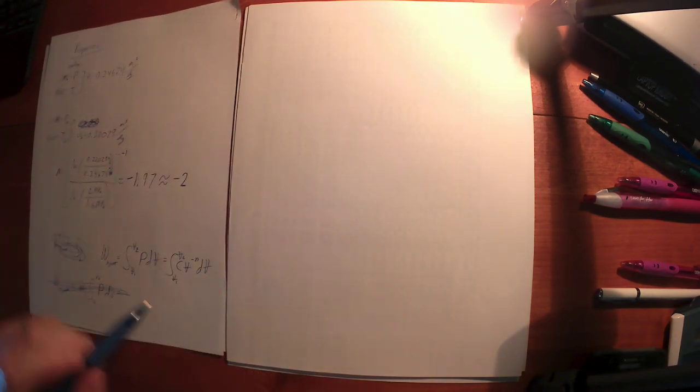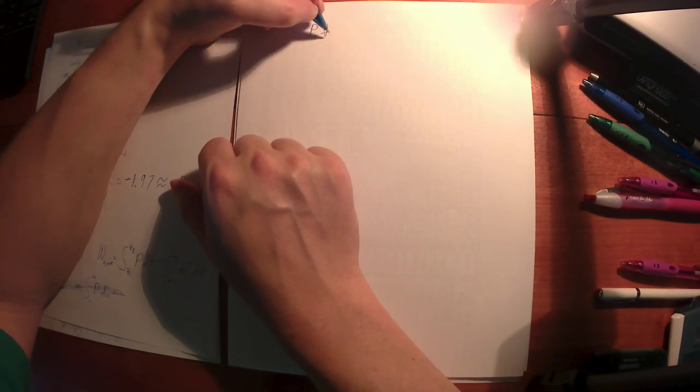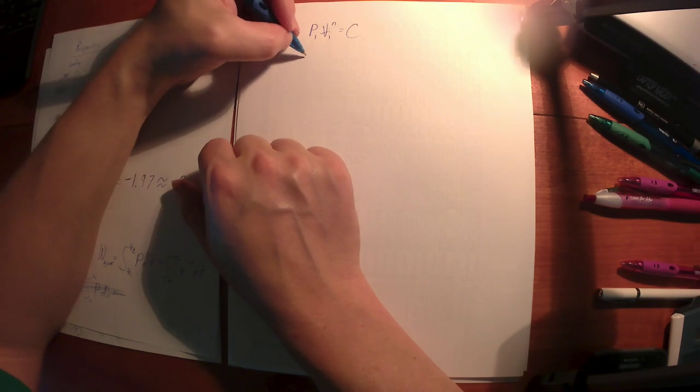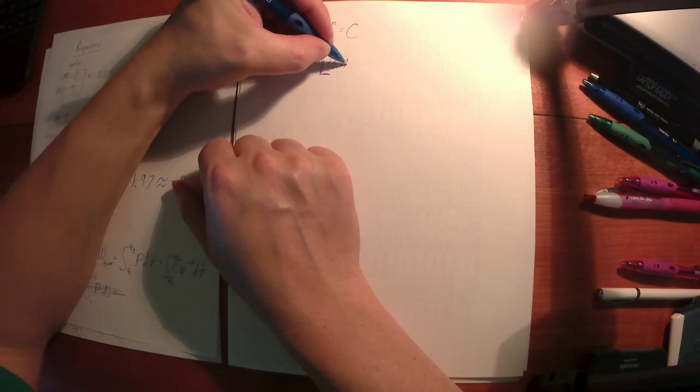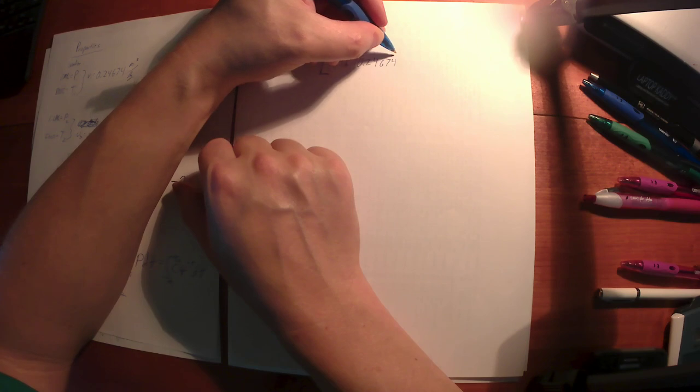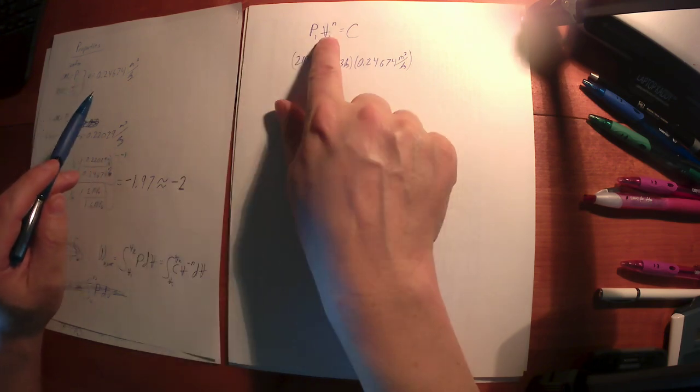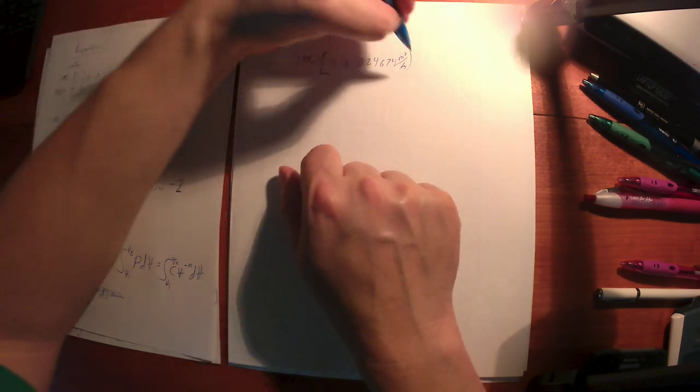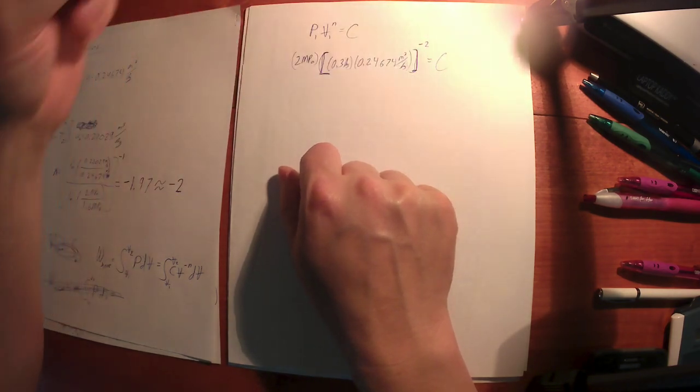All right. Let's keep rocking along. So what else do we need to do? Well, I know n now. I can find the volumes. I need to know C. Again, if we go back to the very beginning, by definition of polytropic, P1 V1 to the power n is equal to C. Okay, so at state 1, it's 2 megapascals times, let's put this in brackets. The mass can be 0.3 kilograms. The specific volume at state 1 is 0.24674 meters cubed per kilogram.